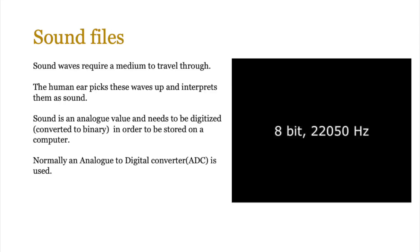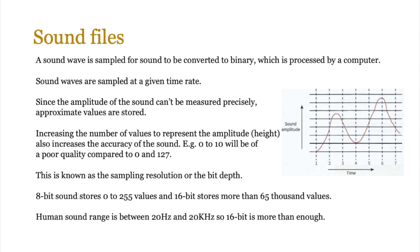Let's look at sound files. Sound waves require a medium to travel through — the moment you speak, sound waves are created and travel through the air to reach the eardrum. The human ear picks up these waves and interprets them as sound. Sound is an analog value and needs to be digitized — converted to binary — in order to be stored on a computer. Normally we use an analog to digital converter, or ADC, to convert it. A sound wave is sampled for the sound to be converted to binary.